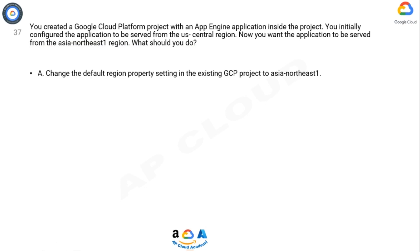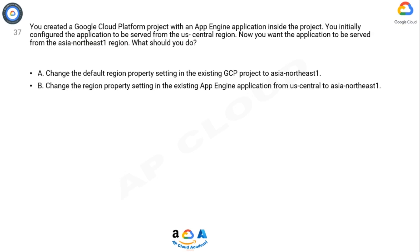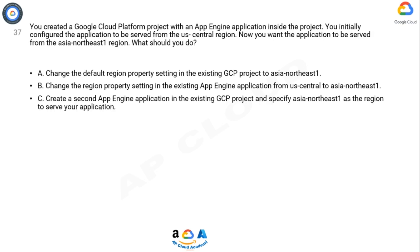Option A: Change the default region property setting in the existing GCP project to Asia Northeast 1. Option B: Change the region property setting in the existing App Engine application from US Central to Asia Northeast 1. Option C: Create a second App Engine application in the existing GCP project and specify Asia Northeast 1 as the region to serve your application.